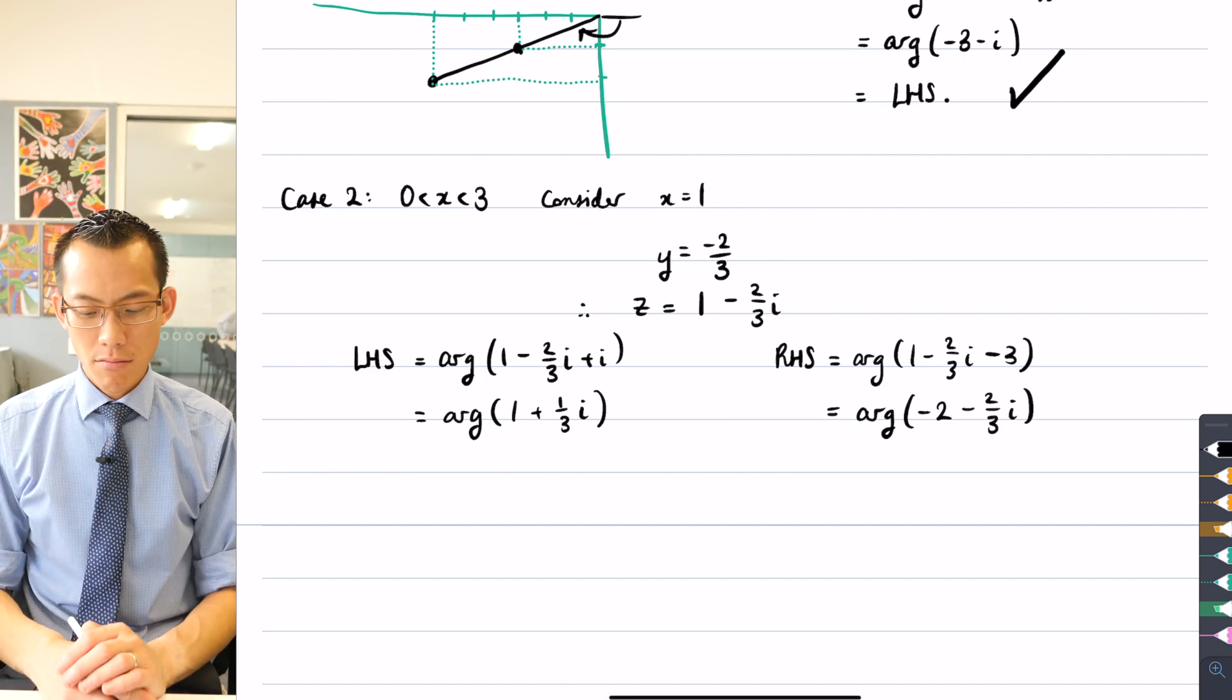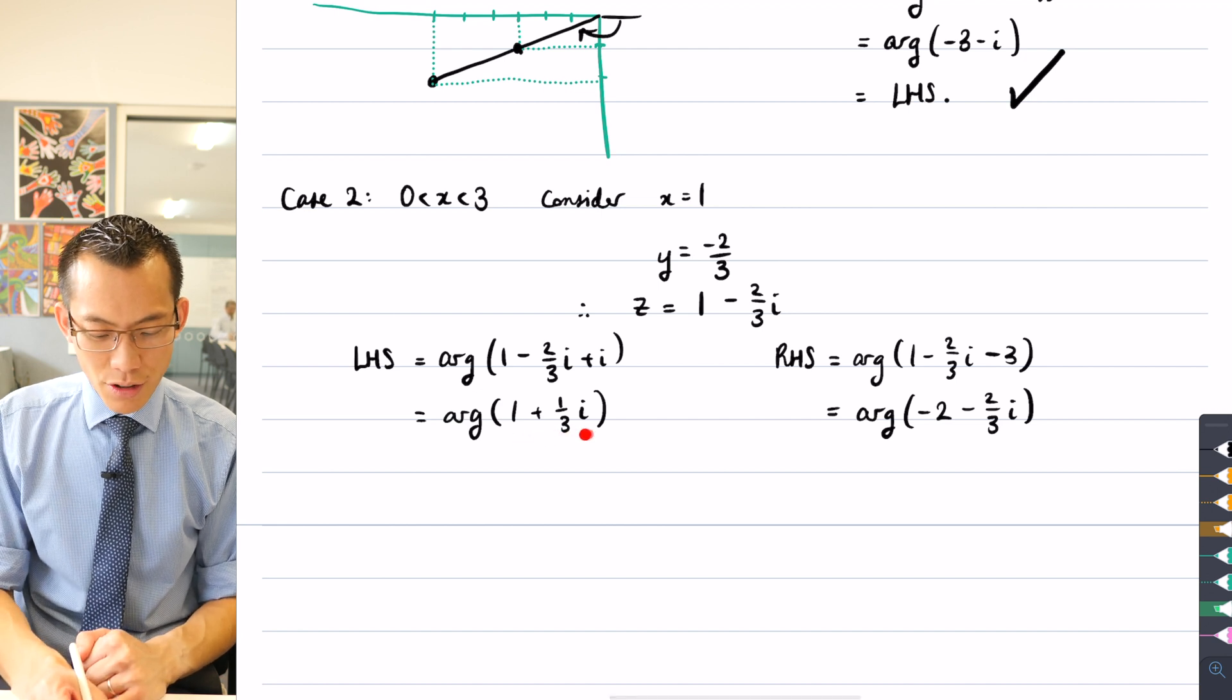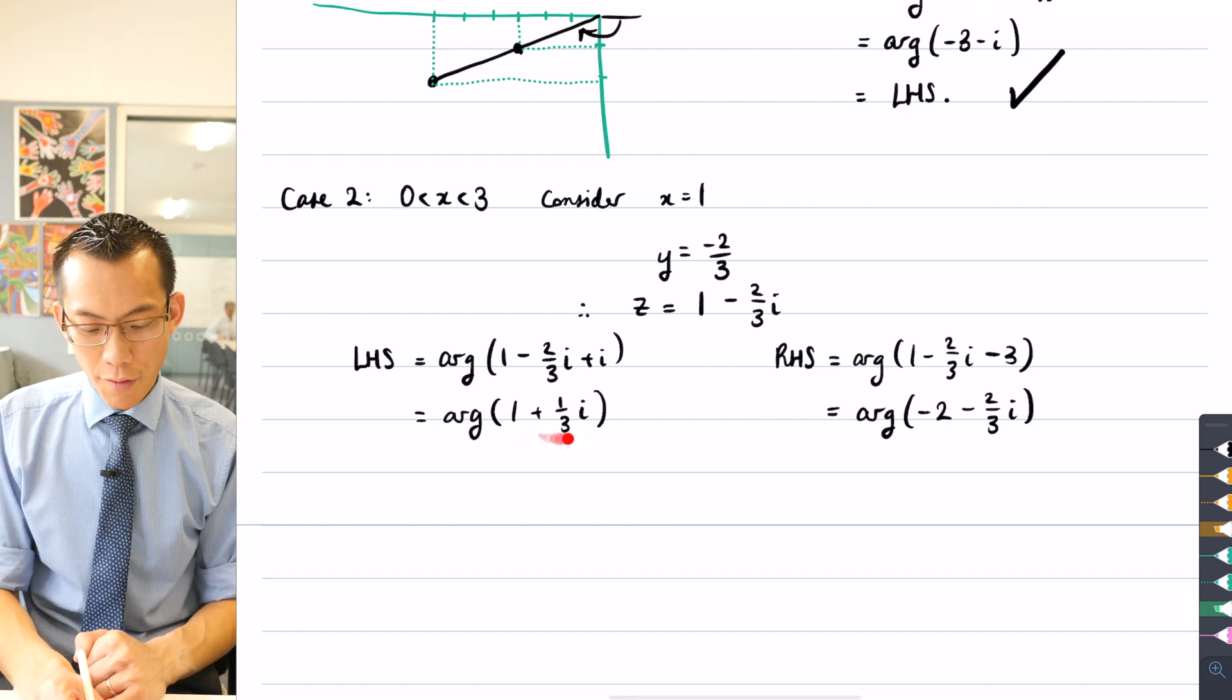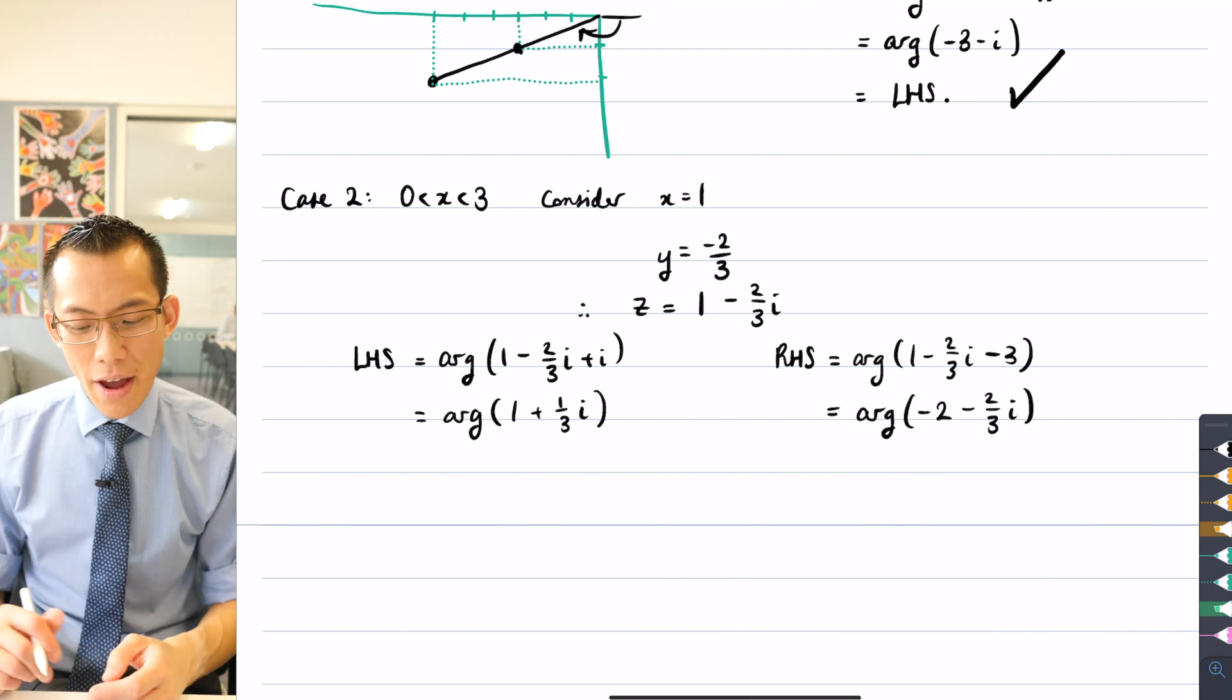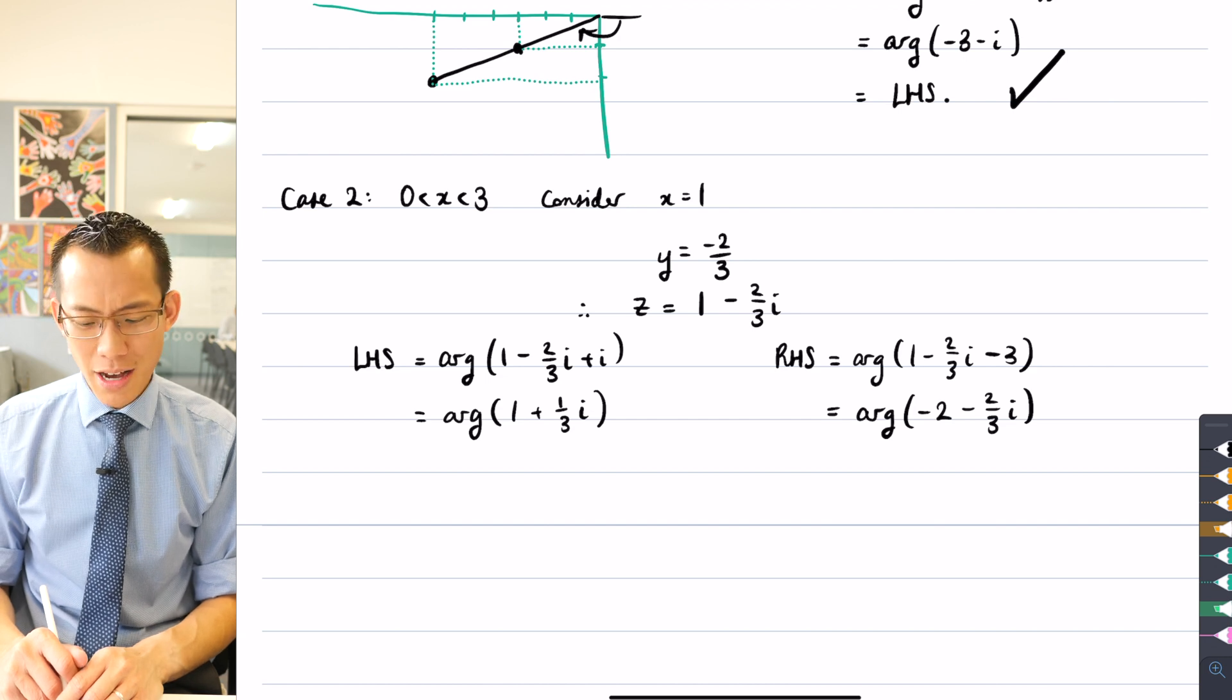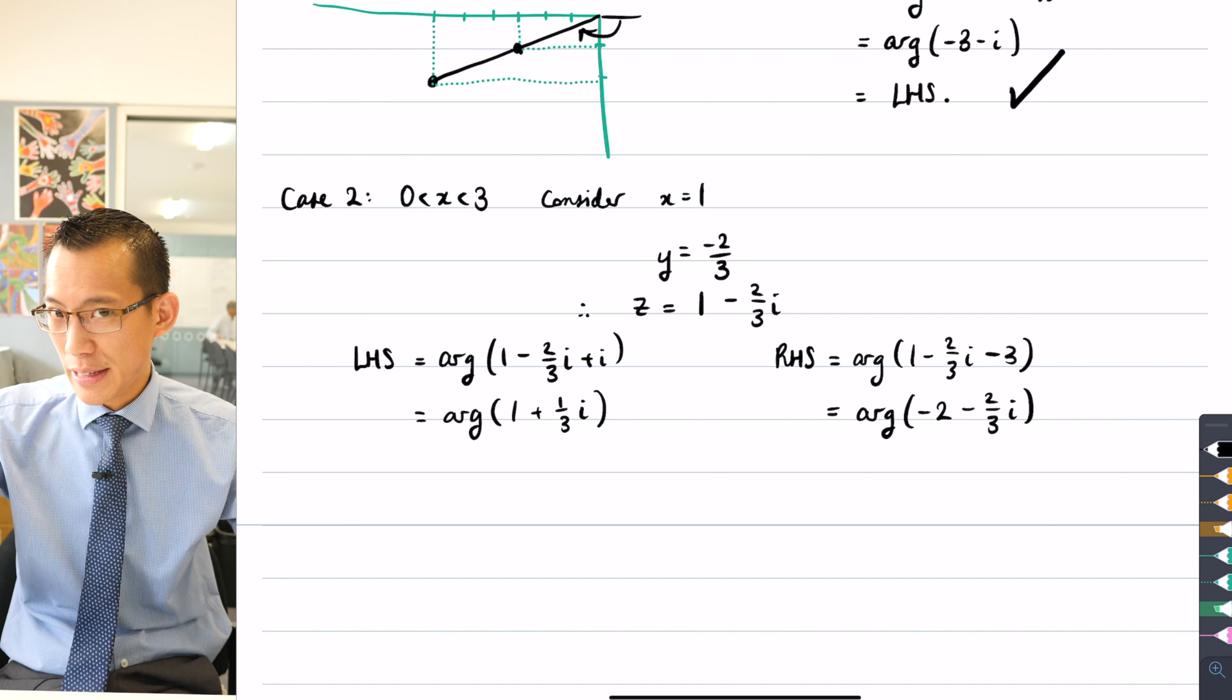And at this point, you're like, wait a second. This is a problem, right? This angle, this complex number here is in the first quadrant. And this complex number here is in the third quadrant. I don't know where these numbers are or what their angles are, their arguments are, but they can't possibly be the same because they're in completely different quadrants.